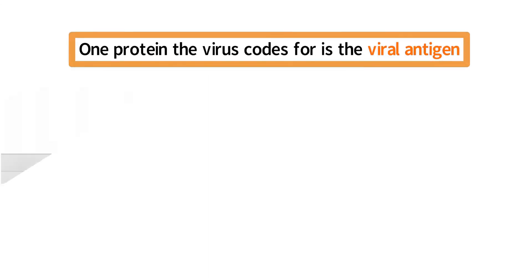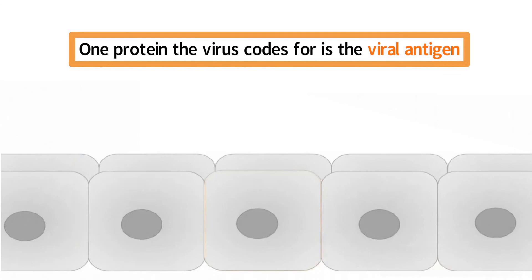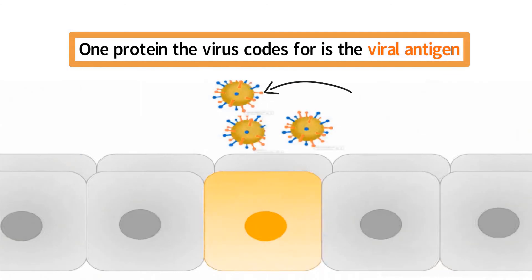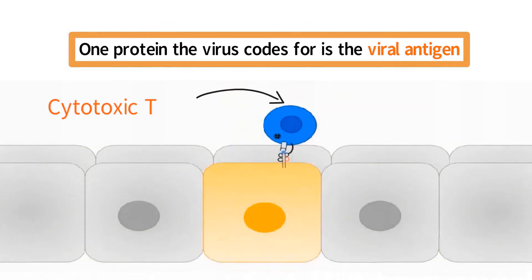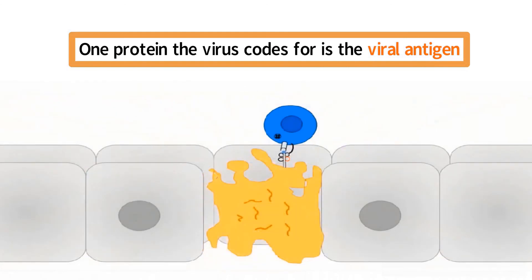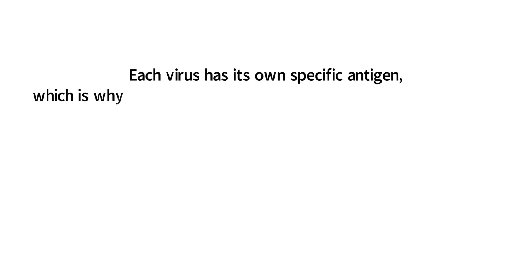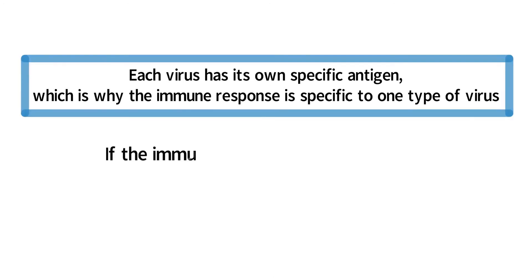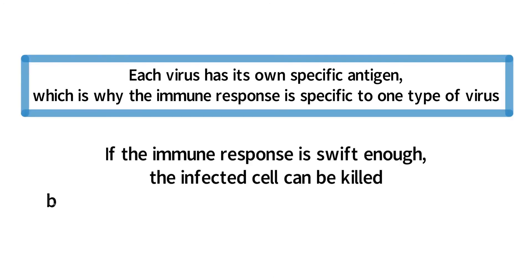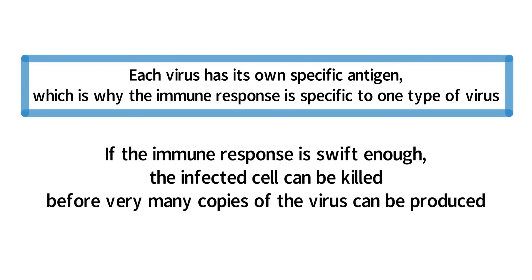Thus, the reason a cell infected with the virus is able to change from having a healthy normal antigen to an antigen indicating viral infection is because of the production of the viral antigen. When the viral antigen is loaded onto MHC1 and presented on the outside of the cell, the immune system is alerted that the cell is infected with the virus and the cell is killed by the immune system. Each virus has its own specific antigen, which is why the immune response is specific to one type of virus. If the immune response is swift enough, the infected cell can be killed before very many copies of the virus can be produced.